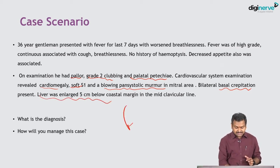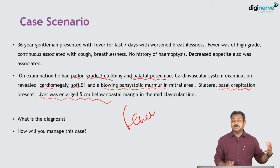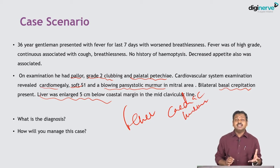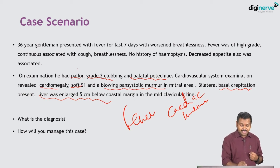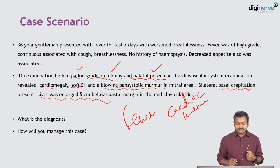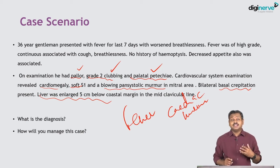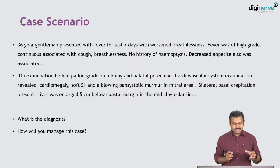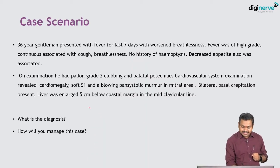So here we have a patient with a continuous high grade fever ongoing for over seven days, and on examination a cardiac murmur is present. Along with fever there is pallor, clubbing, and palatal petechiae — signs of peripheral immunological or embolic phenomena seen in infective endocarditis. Hepatomegaly and lung crepitations suggest associated heart failure.